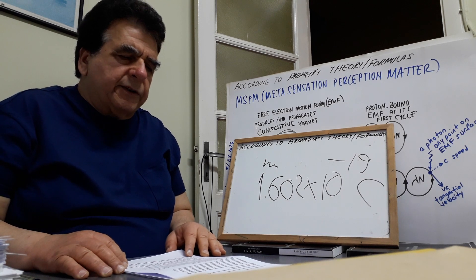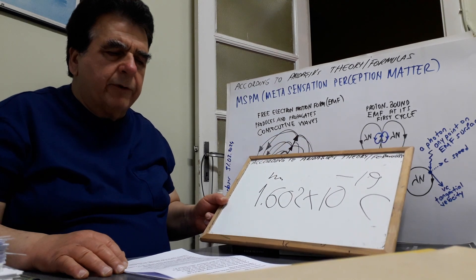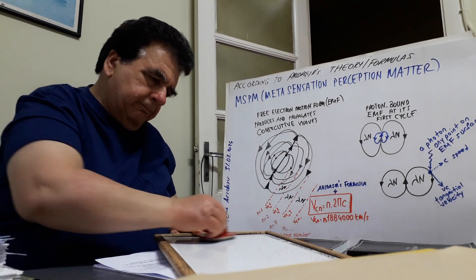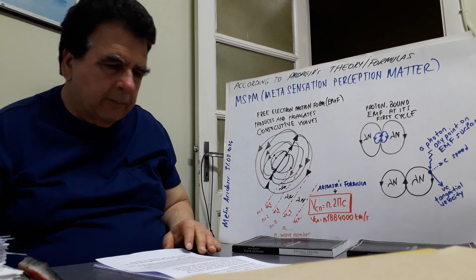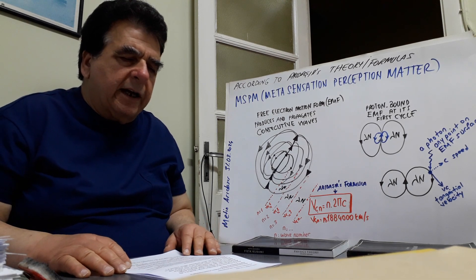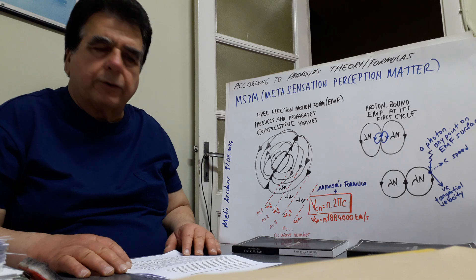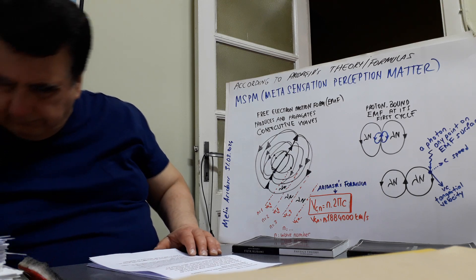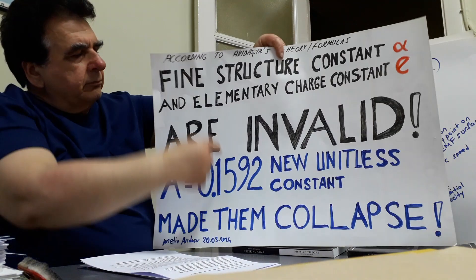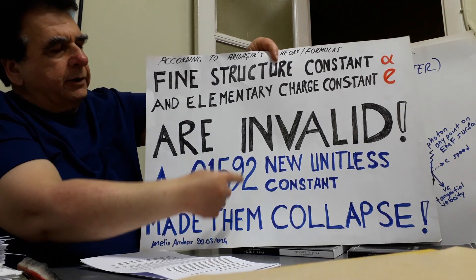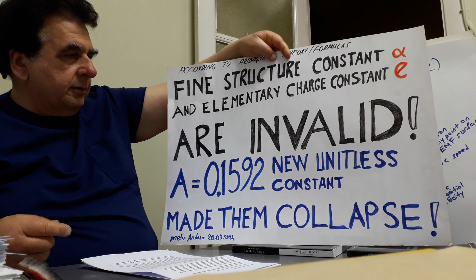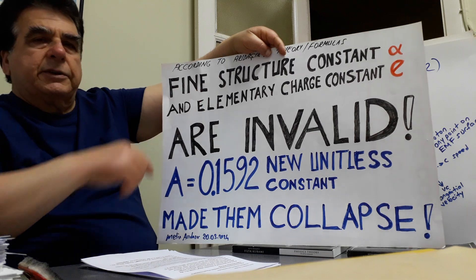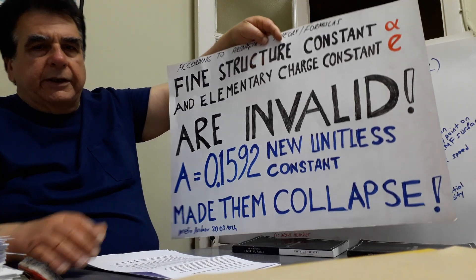I discovered a constant that has the same value for both electrons and photons, but this constant has no unit. This is the constant: 0.1592. This new unitless constant shows that the fine structure constant and elementary charge constant are invalid, as I told you before.